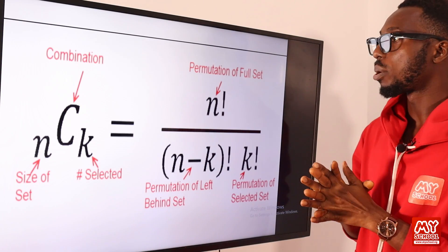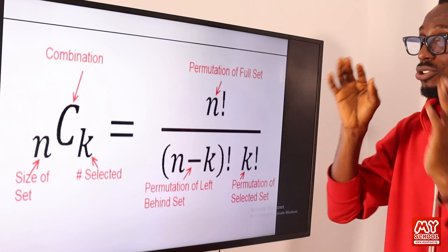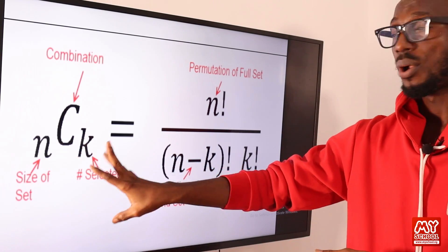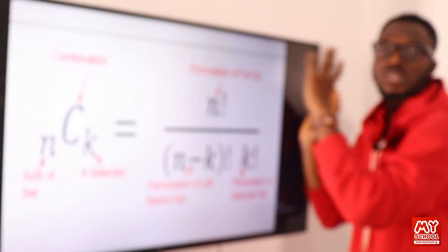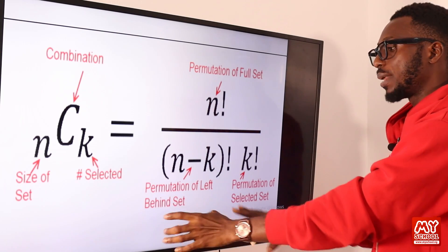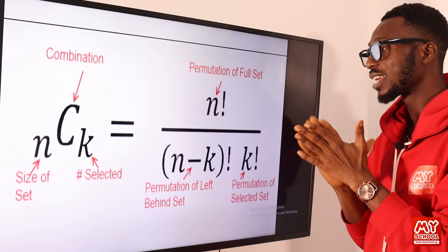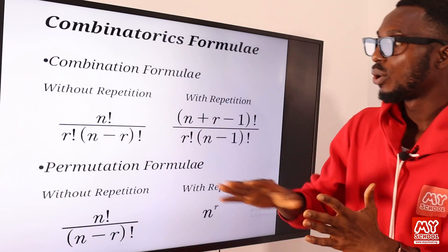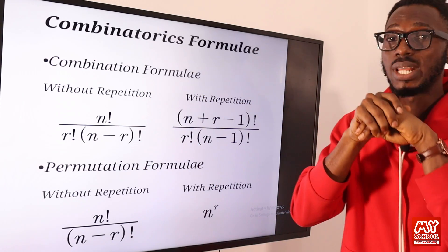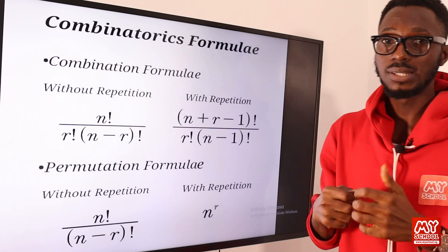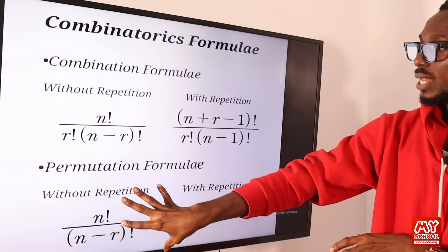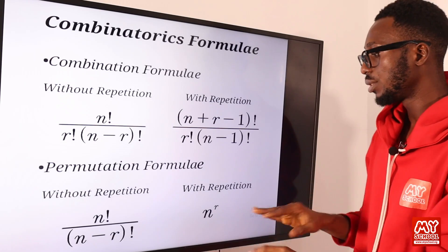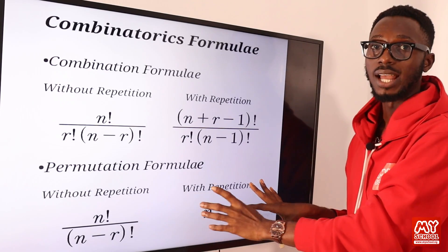Moving on to combination: combination is just about selection. We have N as the size of the set and K (or R) as what we have selected. The general formula without repetition is what we use when an object selected is not repeated again. When you have combination with repetition, a different formula applies. We use each formula under the right conditions.